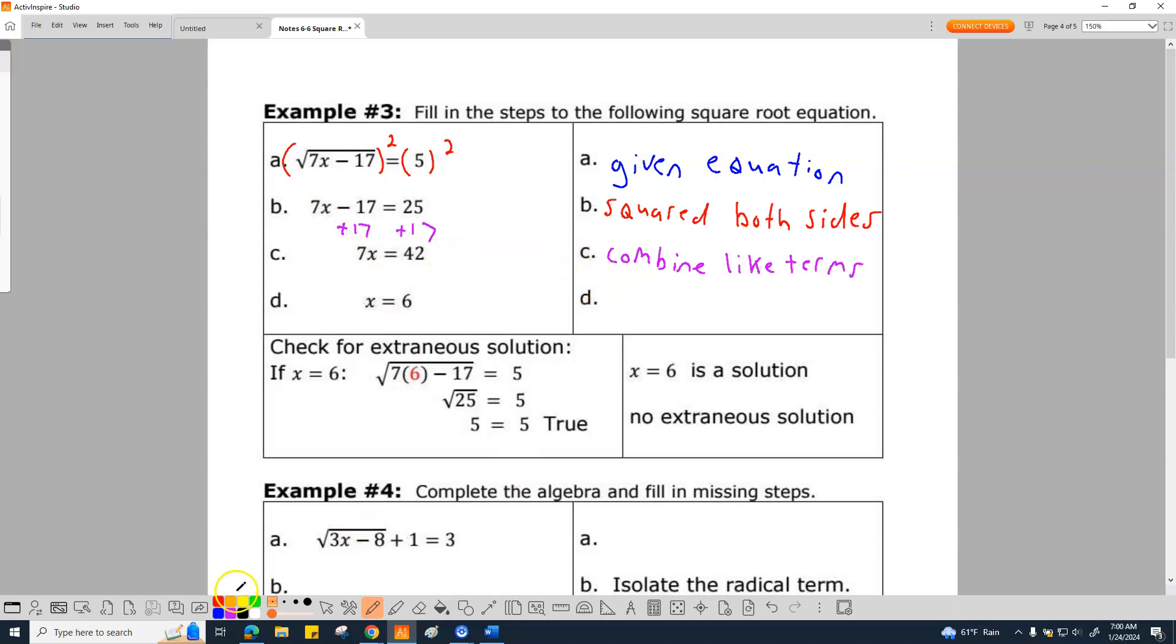D is just solve for x. After you get to that solve for x, you divide the 7 out. If you divide the 7, divide by 7, divide by 7, you get x equals 6. So, solve for x.